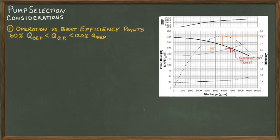On this chart, the BEP is located by drawing a line vertically from the max efficiency point on the curve to the pump performance curve. The corresponding flow rate is read from the x-axis. In this example, the Q_BEP is 5800 gallons per minute.